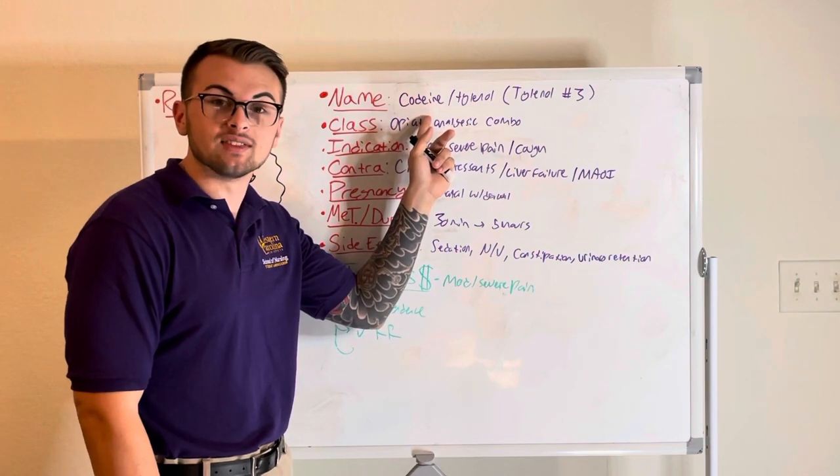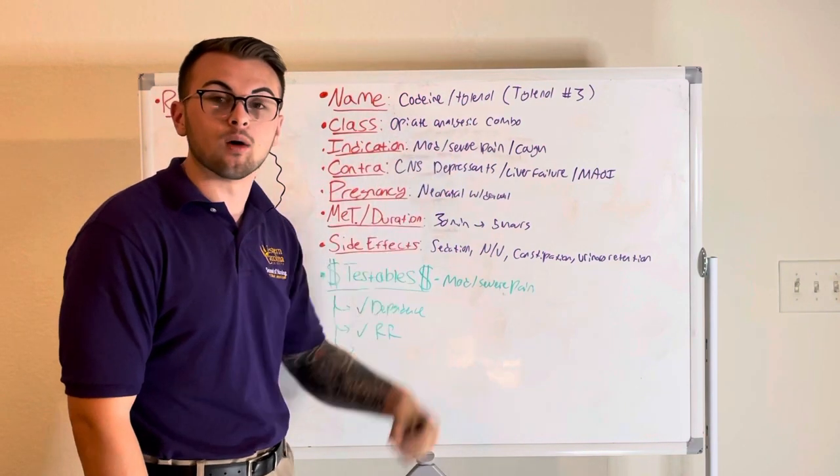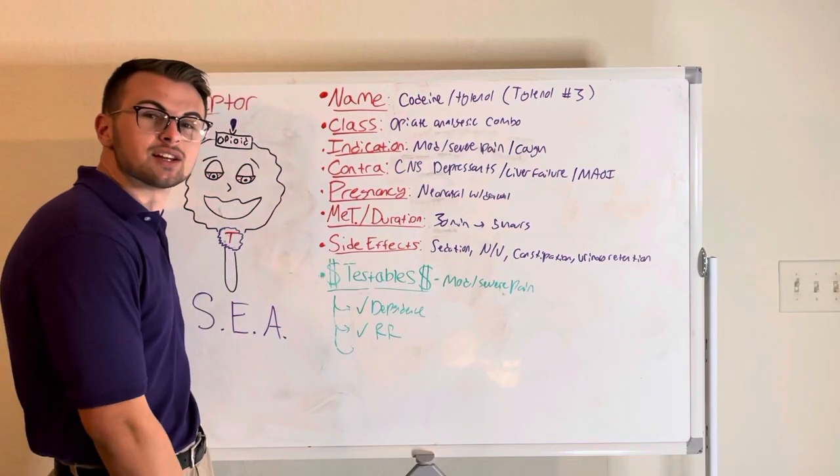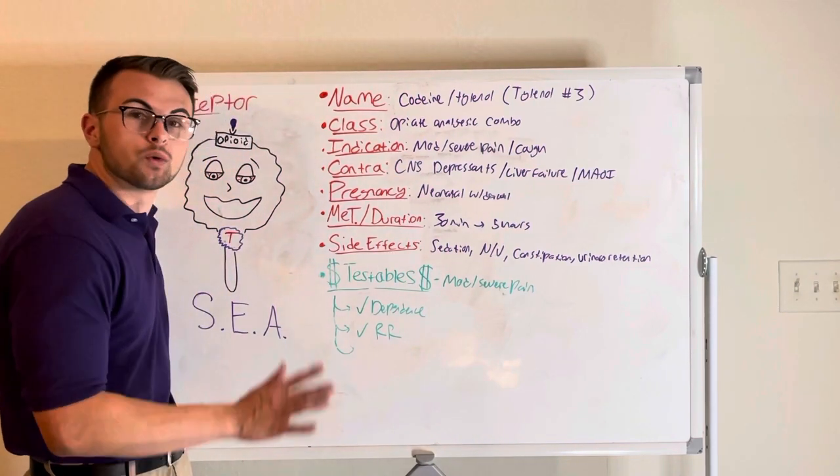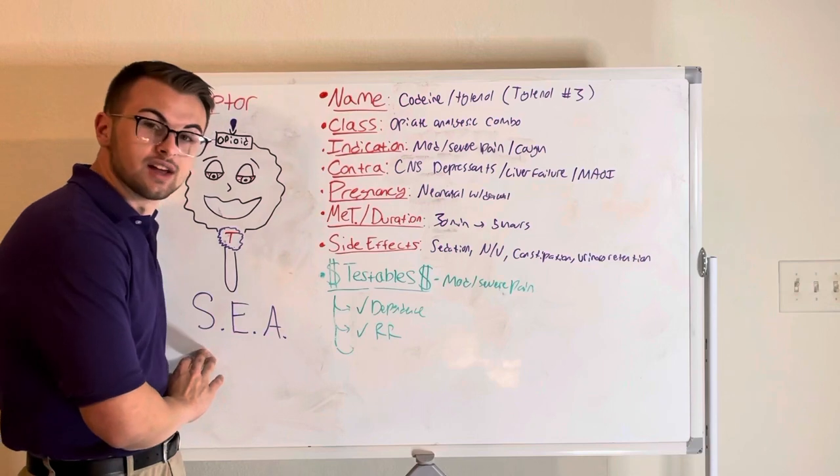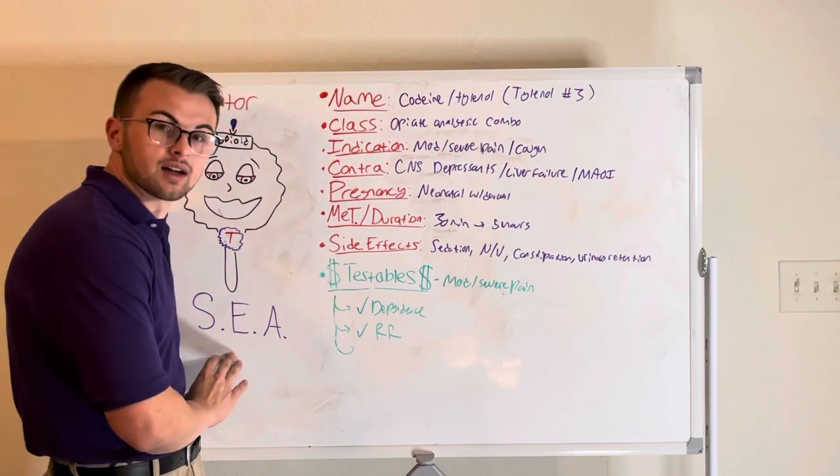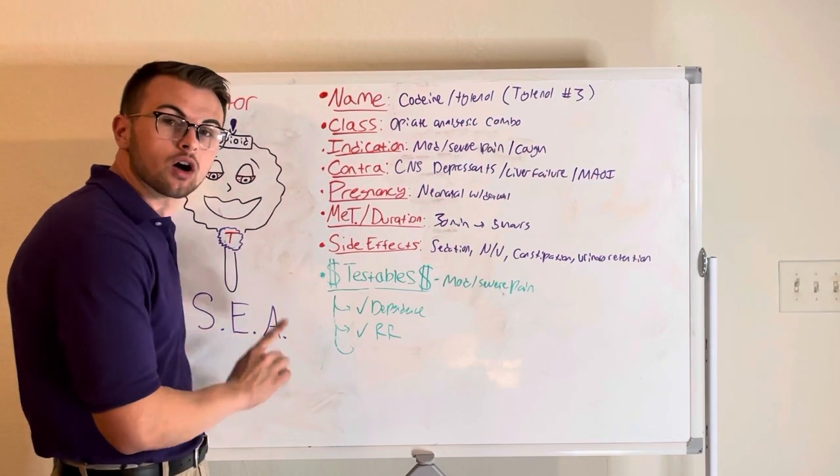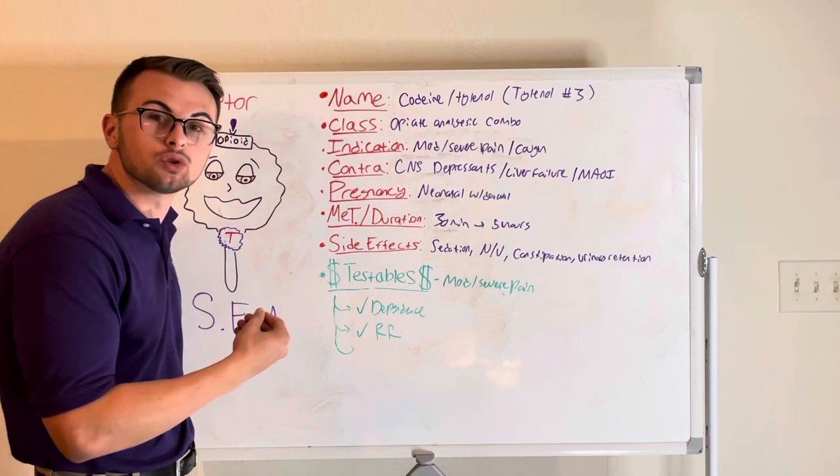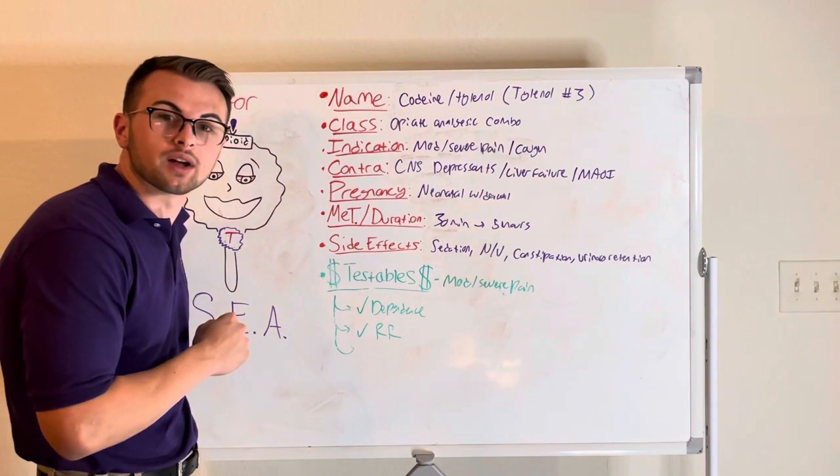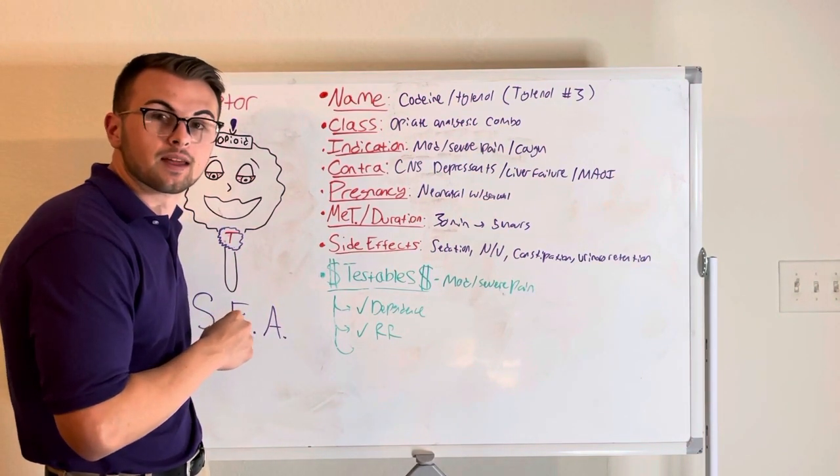Now what we need to remember is that codeine is an opiate agonist which causes sedation, euphoria, and analgesia. It also works in the medulla to suppress the respiratory and cough centers.